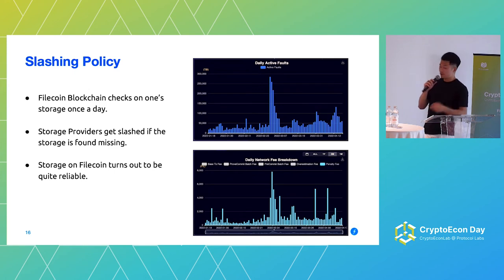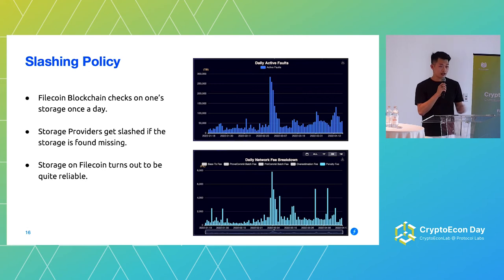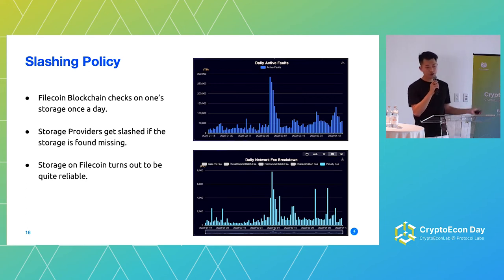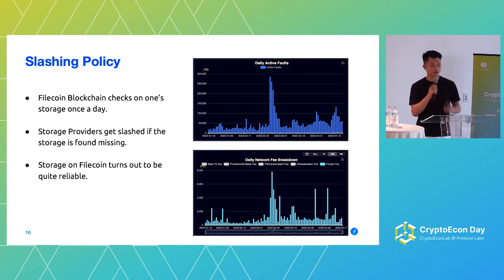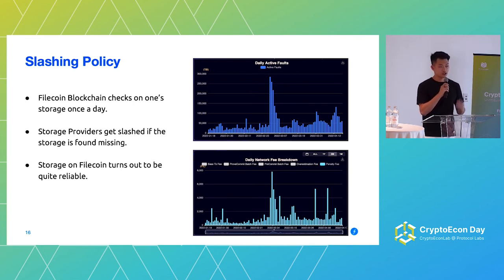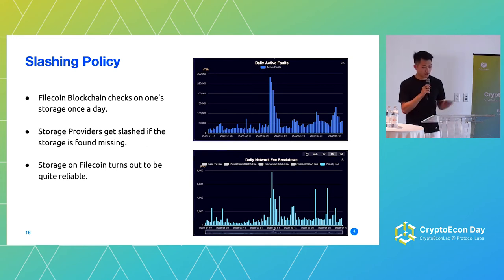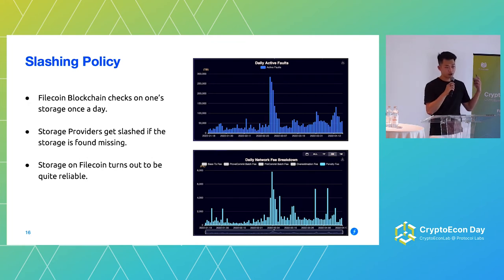With collateral, there's also slashing. Slashing happens either when you violate the consensus security of the protocol, or when you commit to storing data but your storage is not reliable. The Filecoin blockchain checks in on all storage providers every single day — if you can show your storage, nothing happens; but if you've lost the data, the blockchain slashes some of your collateral. So far, storage has been pretty reliable. We can see a very clear correlation between faults on the Filecoin network and the collateral being slashed from storage providers.